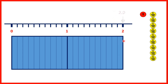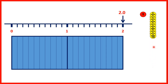If we count on another tenth, we now have 20 tenths coloured in altogether. We have two whole rectangles coloured in, so that's 2.0. Remember, the digit before the decimal point tells us how many wholes we have, and the digit after the decimal point tells us how many extra tenths we have. These 10 tenths again can be exchanged for one more whole.